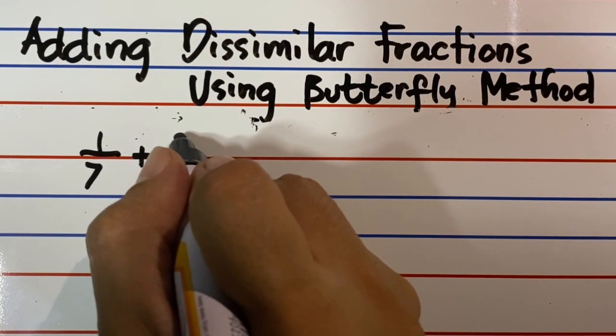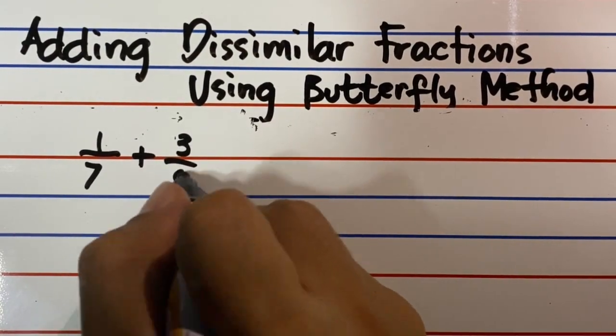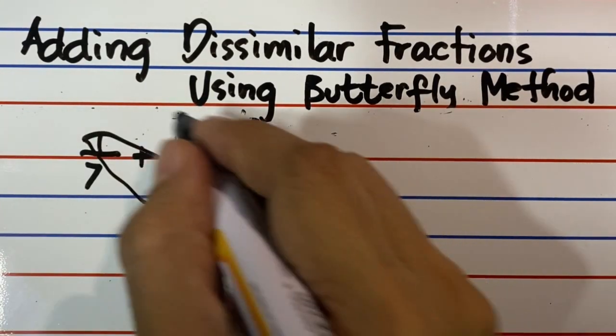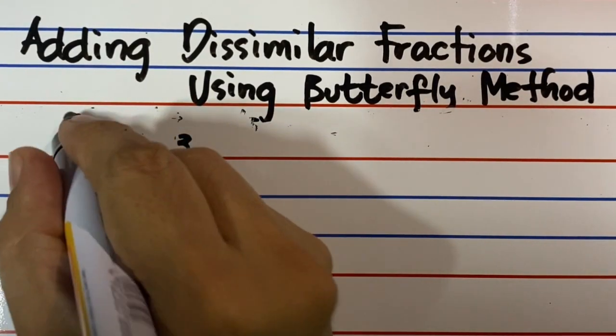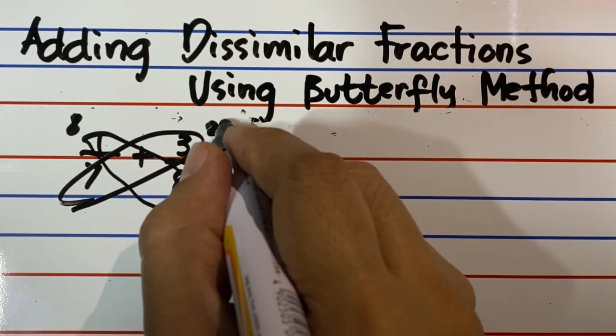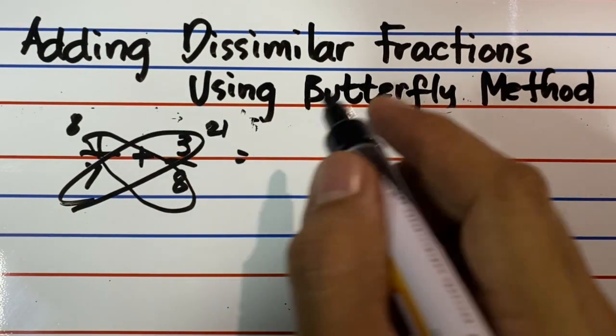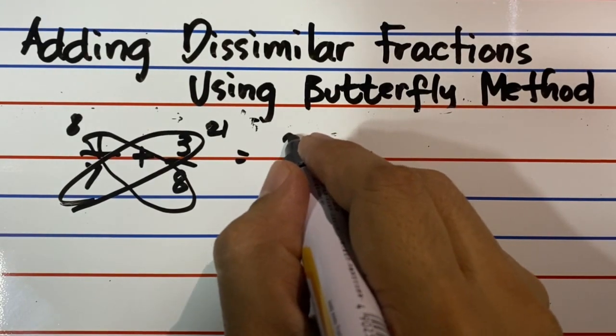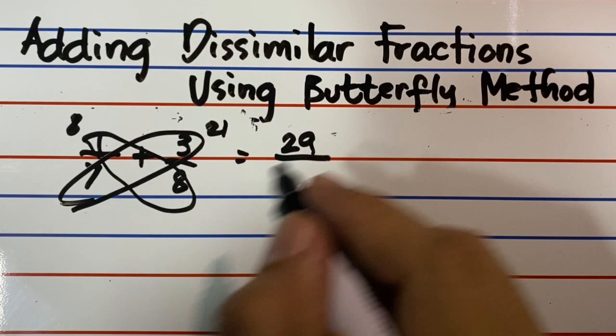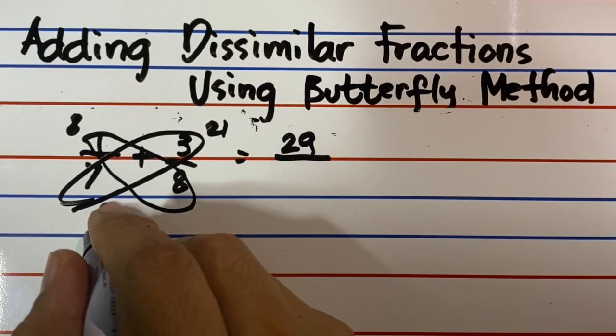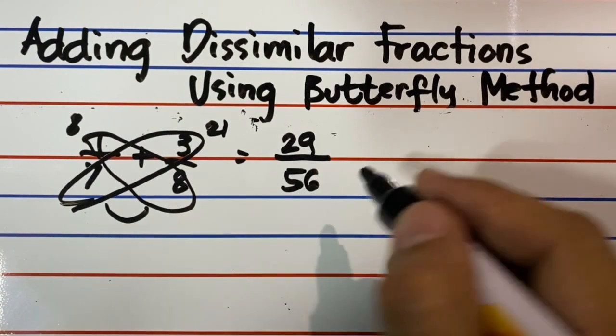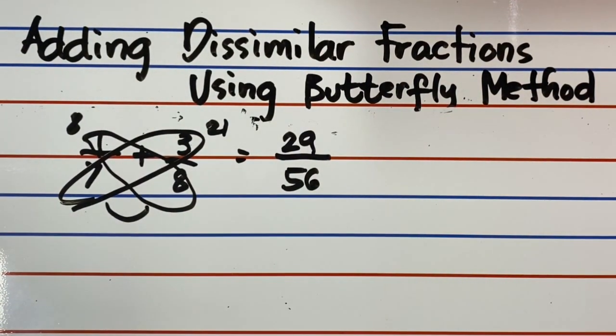Let's take 1 seventh plus 3 eighths. Encircle 1 crossing over 8. 1 times 8 equals 8. Encircle 7 crossing over 3. 7 times 3 equals 21. Then add 8 and 21 as your numerator. It becomes 29. Multiply the two denominators 7 and 8 to get 56 as your denominator. The answer is 29 over 56.